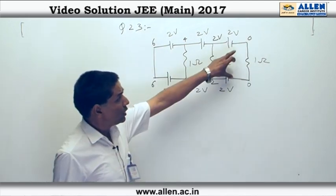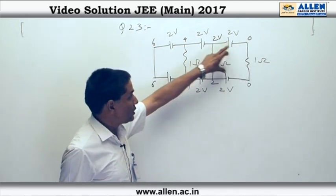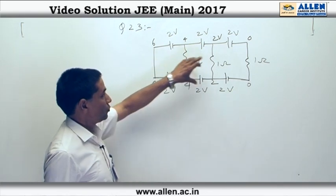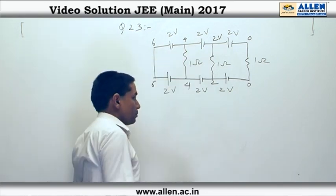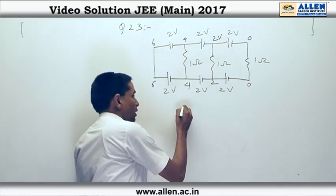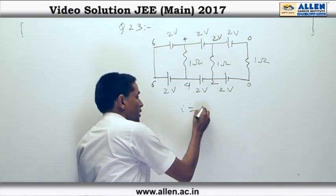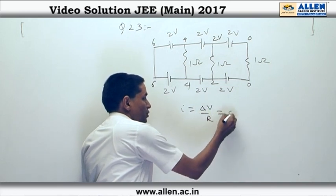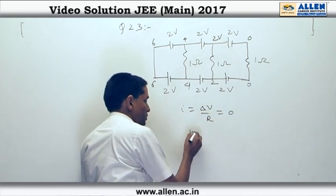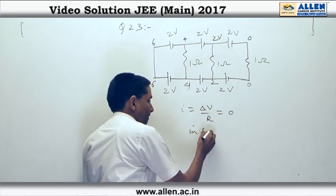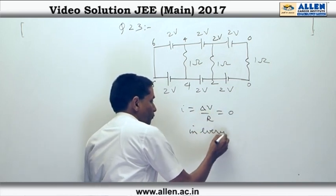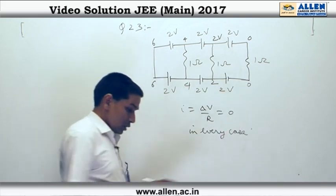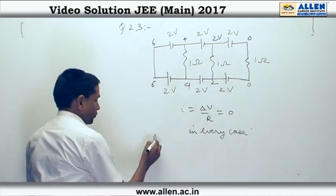As you can see, the potential drop across each of the resistances is 0. Since the potential drop is 0, the current I = ΔV/R, which is 0 in every case. So the answer is option 2.